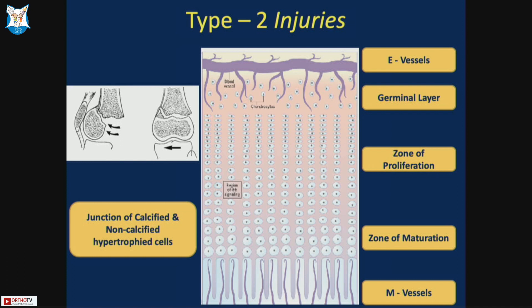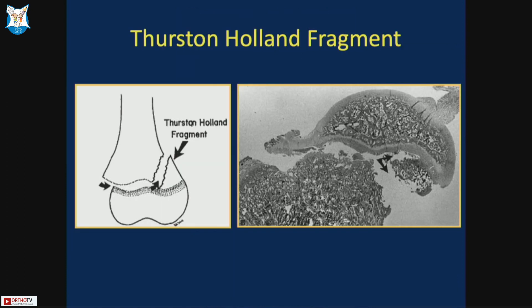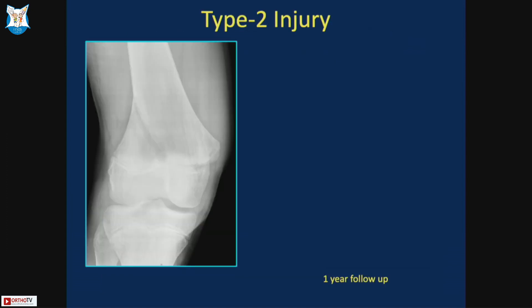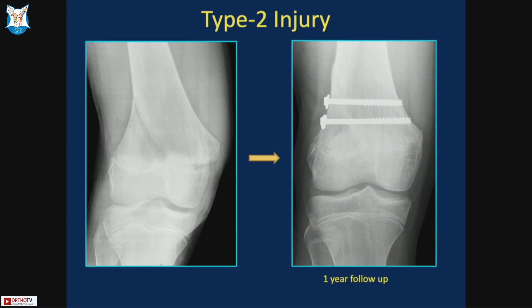Type 2 injuries extend from the metaphysis, with injury through the M vessels, producing a small metaphyseal fragment that propagates through the zone of provisional calcification. The metaphyseal fragment is called the Thurston Holland fragment — the smaller this fragment, the greater the chance of subsequent growth arrest. For example, a Type 2 injury fixed with two metaphyseal screws may develop growth arrest at the physeal part, shown by the red arrow. This can lead to medial physeal arrest and subsequent genu varum deformity on follow-up.